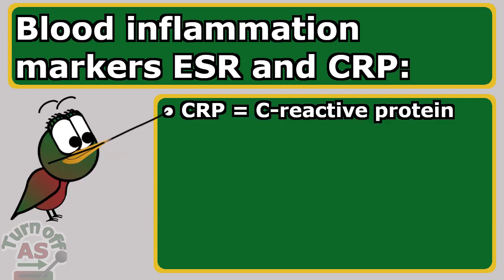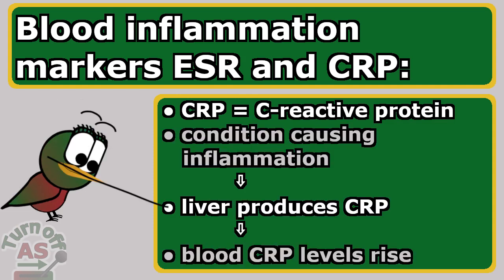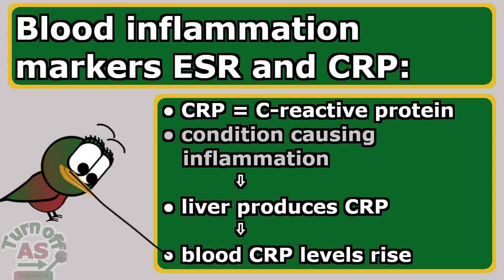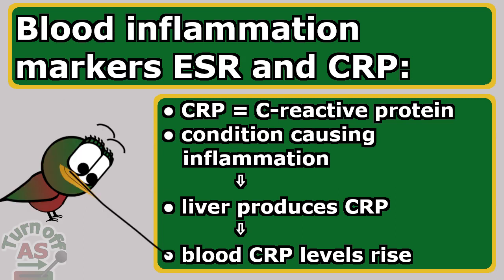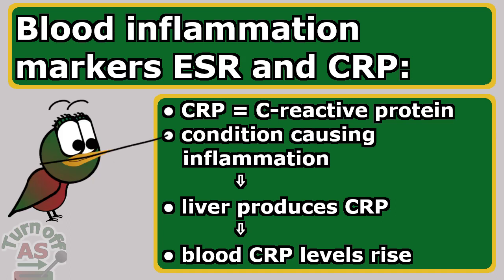CRP, C-reactive protein, is a protein made by the liver. CRP levels in the blood increase when there is a condition causing inflammation somewhere in the body. A CRP test measures the amount of CRP in the blood to detect inflammation due to acute conditions or to monitor the severity of a disease in chronic conditions.